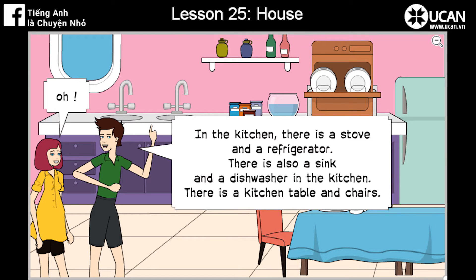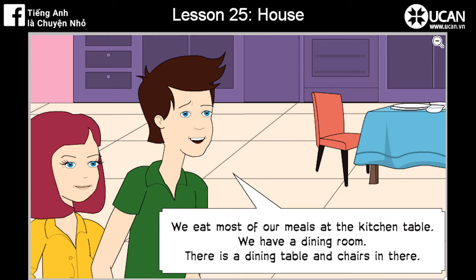In the kitchen, there is a stove and a refrigerator. There is also a sink and a dishwasher in the kitchen. There is a kitchen table and chairs. We eat most of our meals at the kitchen table.